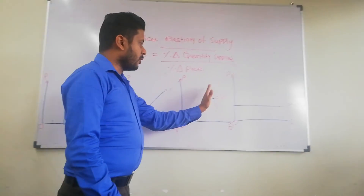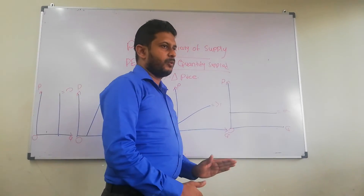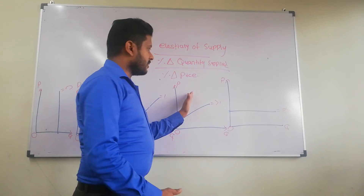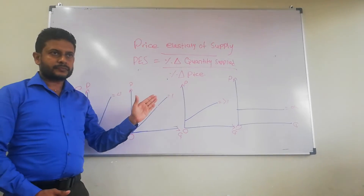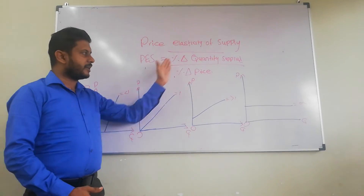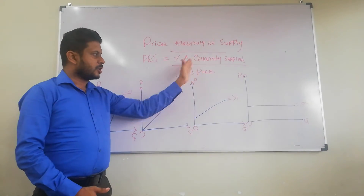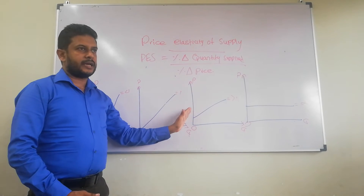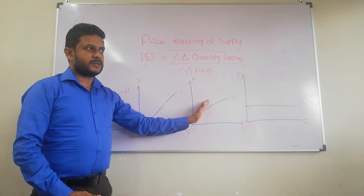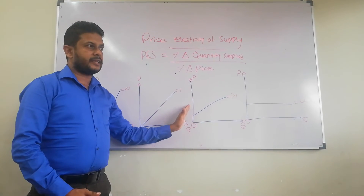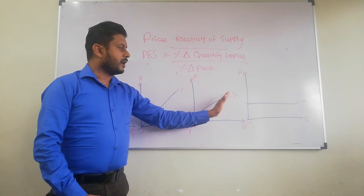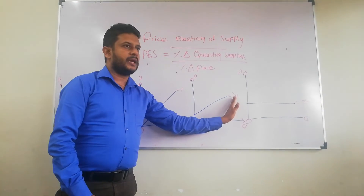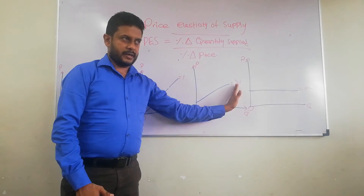Next, we are going to talk about elastic supply. Elastic supply means the responsiveness of quantity supplied to a change in price is more than, or higher than, the price response. The elasticity value will be more than 1.